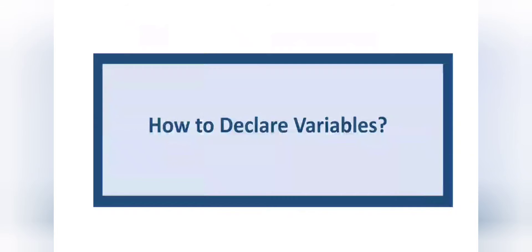Now we are going to discuss about how to declare a variable. To declare means to create. If you have to perform any activity on a stage, first you need to introduce yourself so that everyone will know about you. Similarly in Java, if we have to use a variable in a program, we first need to declare it so that the compiler knows about it. If we don't declare a variable and directly use it, the compiler will raise an error and the program won't compile.